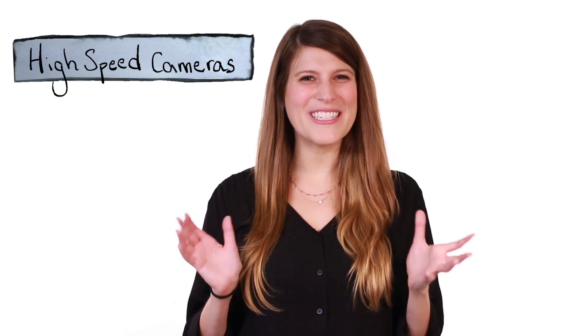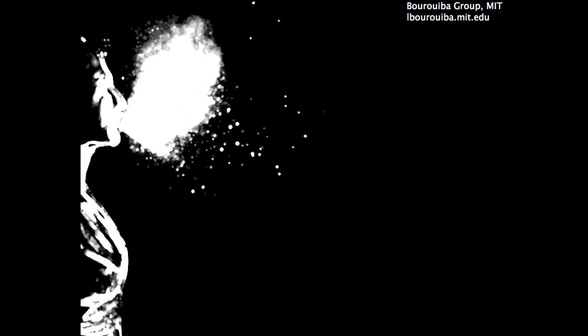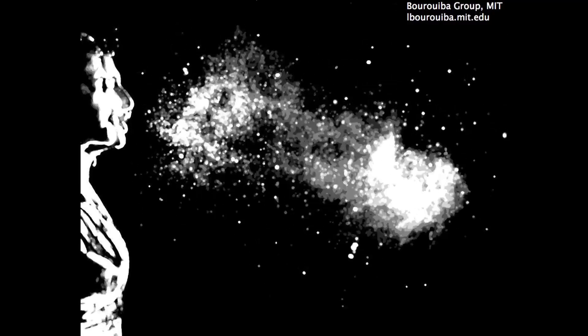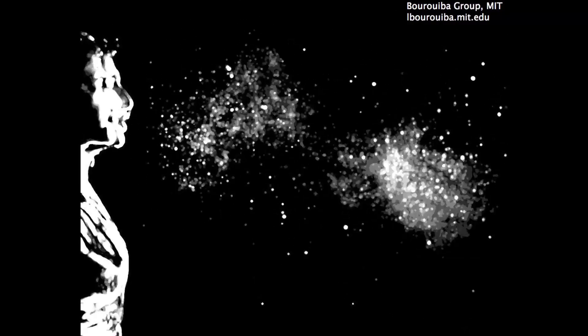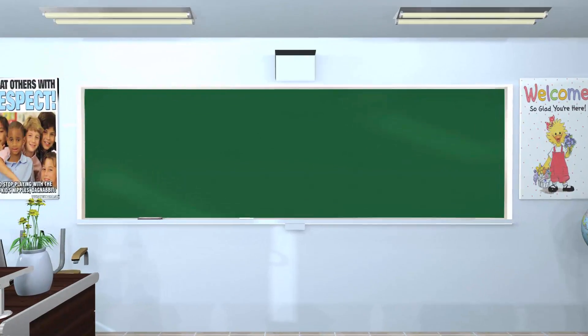These days, scientists can use high-speed cameras to see the juicy details of sneezes and coughs. That's what researchers at MIT did in 2014. They found that droplets in a cough or sneeze travel on an invisible gas cloud, which can carry germs much farther than people previously thought. Small droplets can fly all the way across a room and can get sucked into ceiling air vents, which could spread them even further.